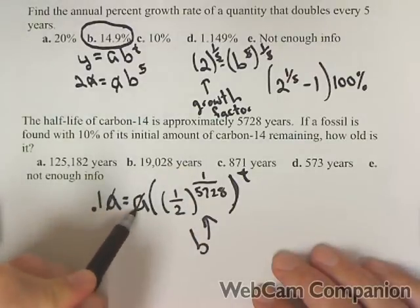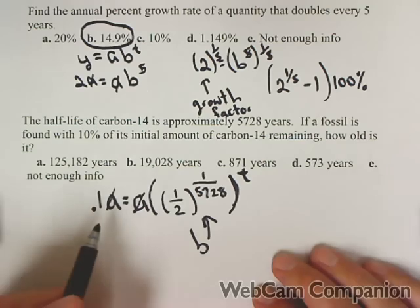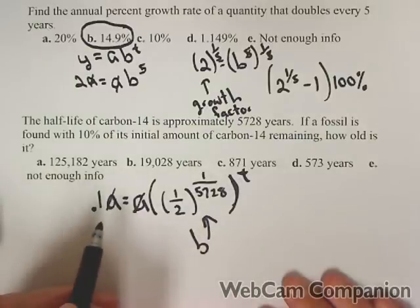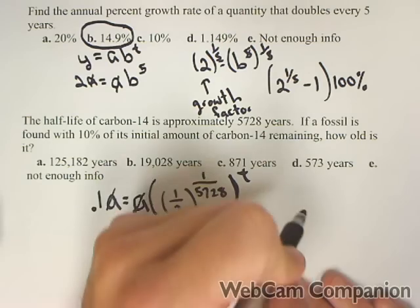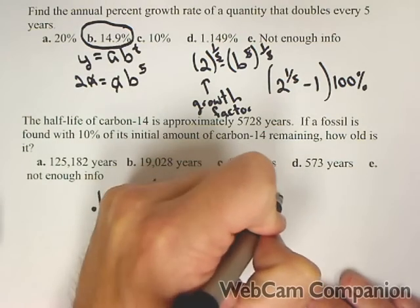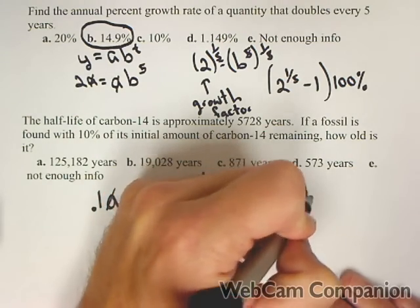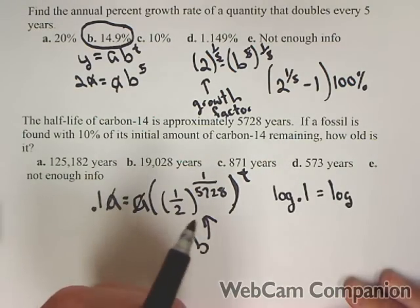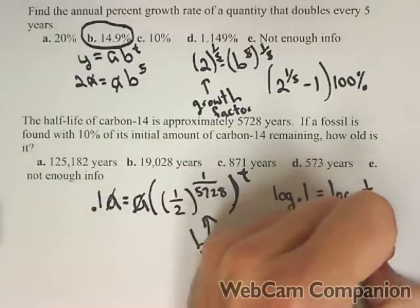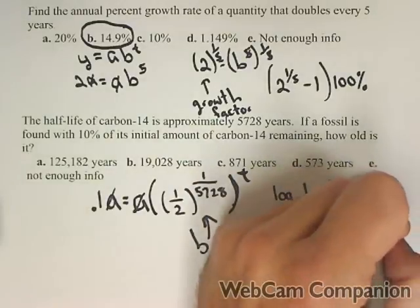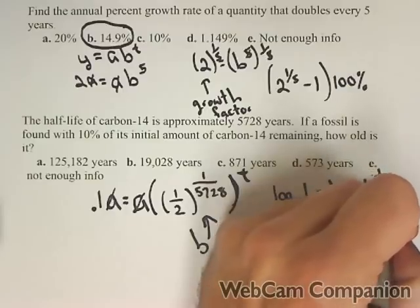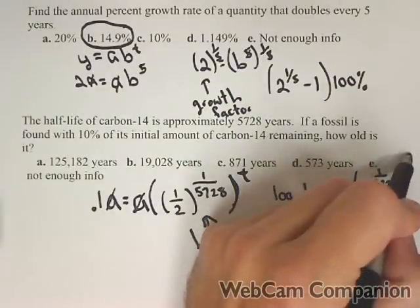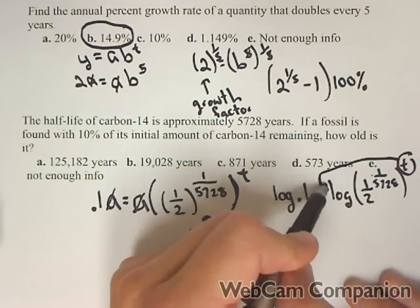First thing we'll do is divide out a on both sides, and now we have something we can solve using logs. We do need logs because t is up in the exponent. So you can rewrite it with logs, or we can take log of both sides. Now, the reason we took a log is because property of logs allows me to pull that t out front.